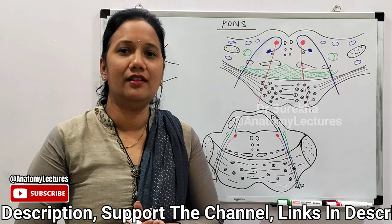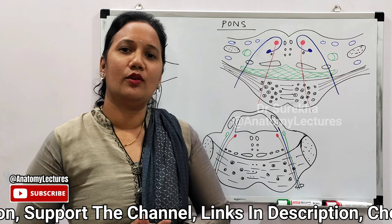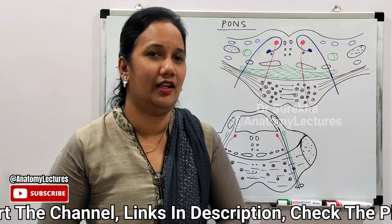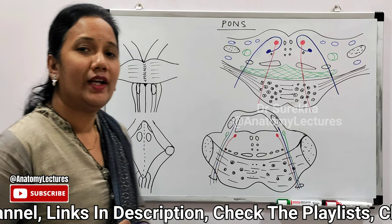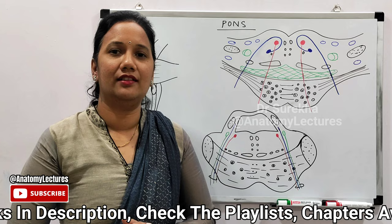Coming to the location of the pons — it is located in the posterior cranial fossa, present between the midbrain and the medulla. When we discuss the external features of the pons, we will discuss it under the following headings.